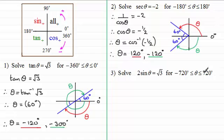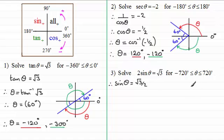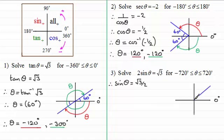For the third question: solve 2 sin θ = √3, for θ between minus 720 and 720 degrees. First, divide both sides by 2 to give sin θ = √3 over 2. Root 3 over 2 is a positive value, so sin θ is positive. Drawing the quadrant diagram: sine is positive in the first and second quadrants. We draw lines equally inclined to the horizontal in those two quadrants and mark both angles as the same.